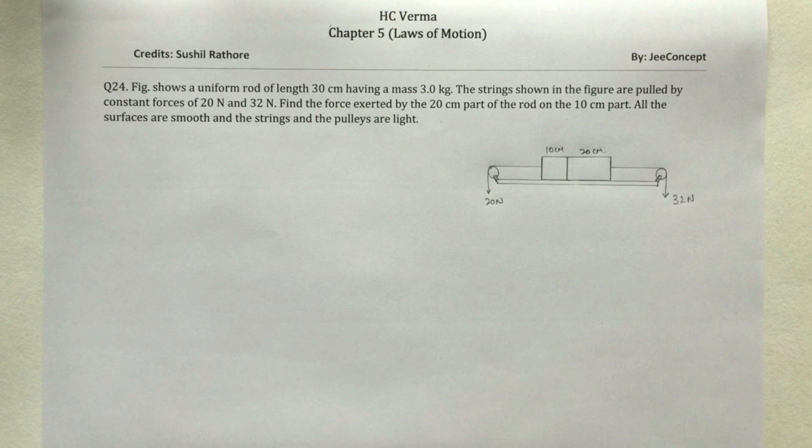The problem statement says in the figure shown, a uniform rod of length 30 cm having a mass of 3 kg. The strings shown in figure are pulled by constant forces of 20 N and 32 N. Find the force exerted by 20 cm part of the rod on the 10 cm part. All the surfaces are smooth and the strings and pulleys are light.